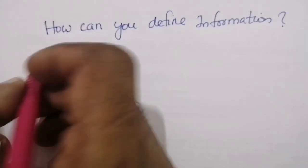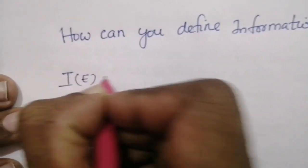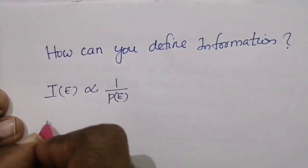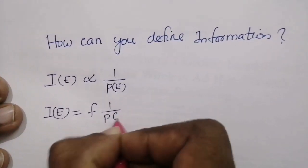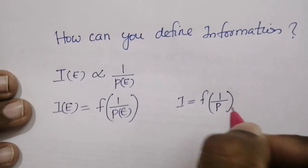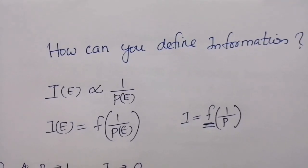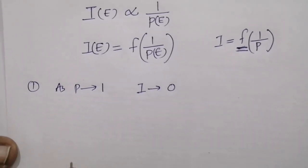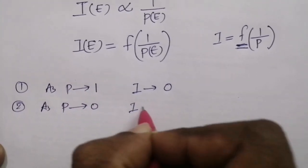From the above discussion, the information associated with an event e is directly proportional to 1/p(e), so I(e) = f(1/p(e)), or simply I = f(1/p). We need to find this function which satisfies the following conditions: condition one — as p tends to one, information tends to zero; condition two — as p tends to zero, information tends to infinity.